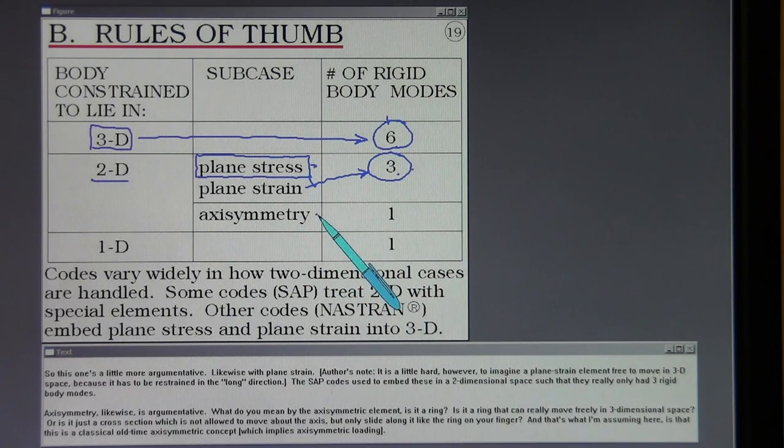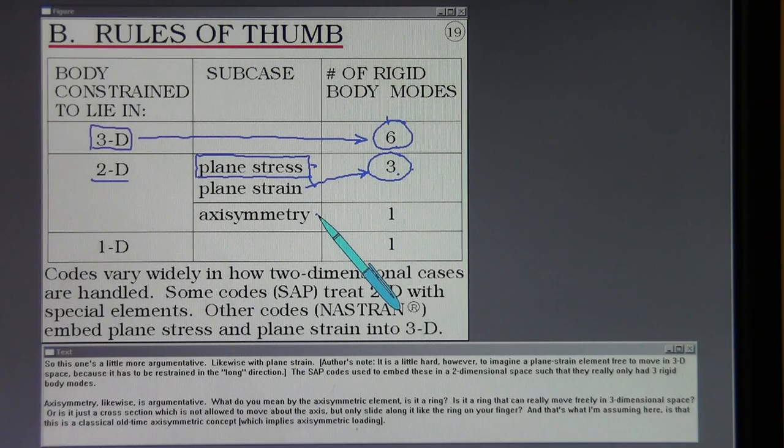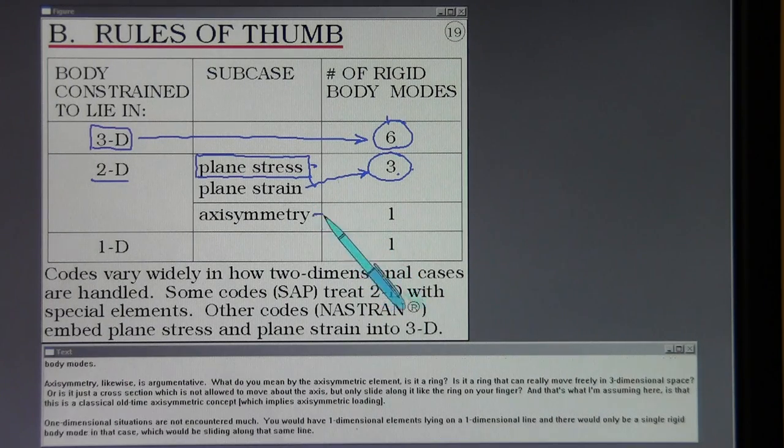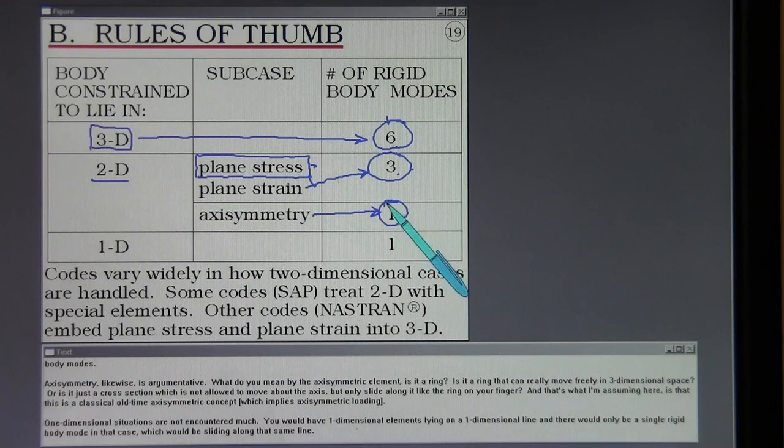Axis symmetry likewise is argumentative. What do you mean by the axisymmetric element? Is it a ring? Is it a ring that can really move freely in three-dimensional space? Or is it just a cross-section which is not allowed to move about the axis but only slide along it like the ring in your finger? And that's what I'm assuming here is that this is a classic old-time axisymmetric concept.